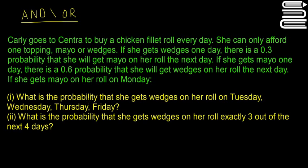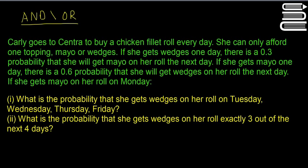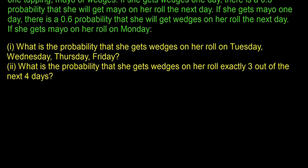If she gets mayo on her roll on Monday, there are two questions. Part one: what is the probability that she gets wedges on her roll Tuesday, Wednesday, Thursday, and Friday? Part two: what is the probability that she gets wedges on her roll exactly three out of the next four days? I'll go through this slowly.